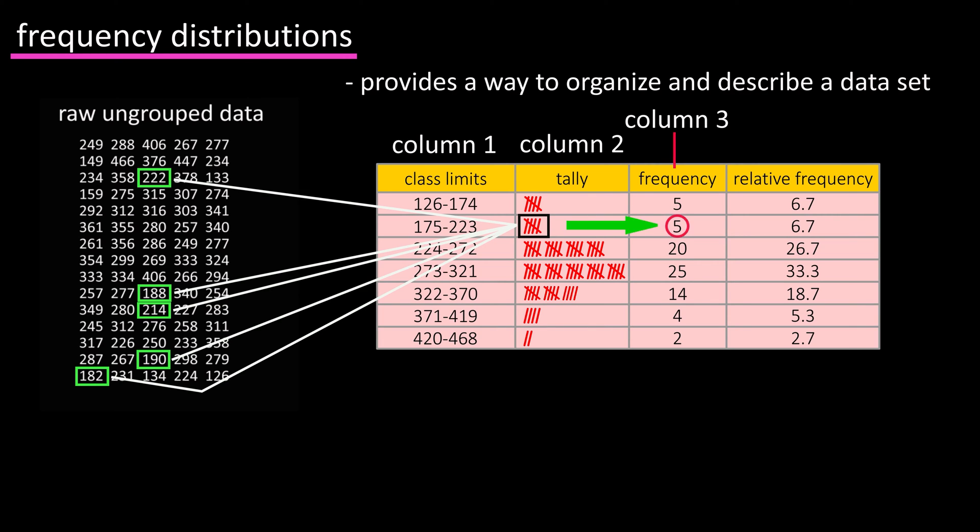Column 3 shows the frequency for each of the classes, which is actually the written number of the tally from the previous column, and column 4 shows the relative frequency for each of the classes.